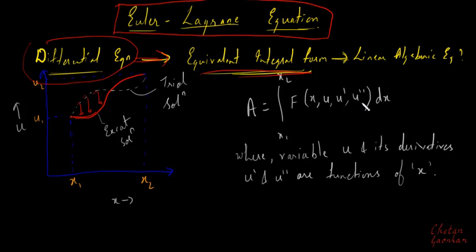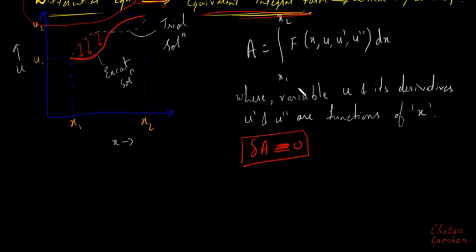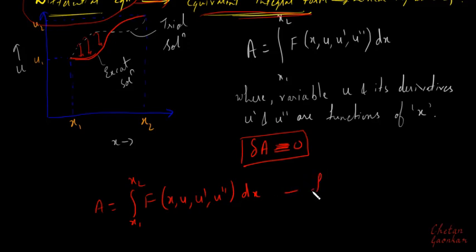...and u double dash, and further these u are functions of x, then our aim will be to minimize this functional. We will try to make the variation in A equal to zero. So we have the functional A as the integral from x1 to x2, which is a function of x, u, u', and u''.